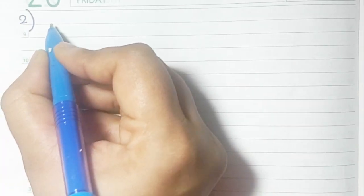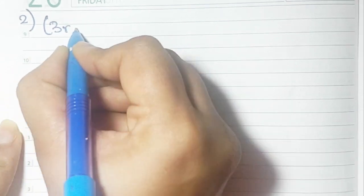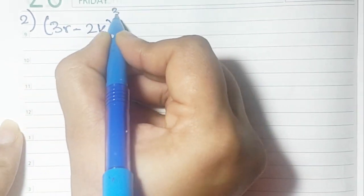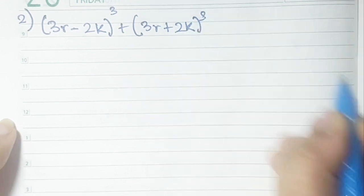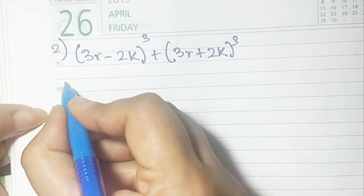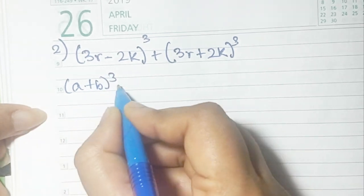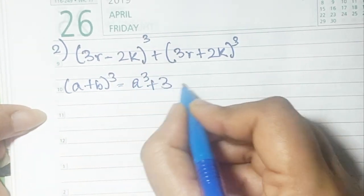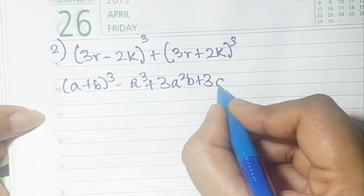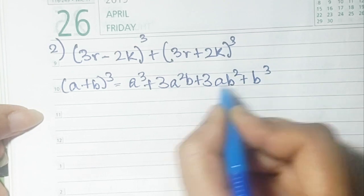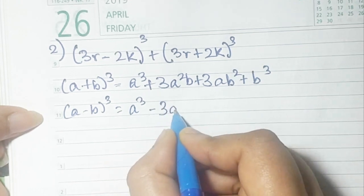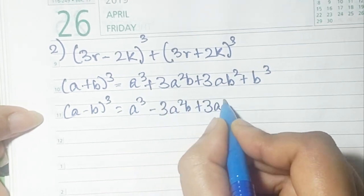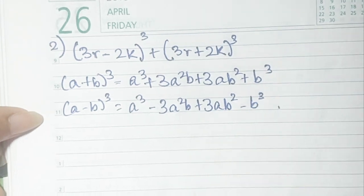Now let's do sum number 2: (3r - 2k)³ + (3r + 2k)³. You know the formulas — (a + b)³ = a³ + 3a²b + 3ab² + b³, and (a - b)³ = a³ - 3a²b + 3ab² - b³. The first bracket is a negative one, so a = 3r and b = 2k.